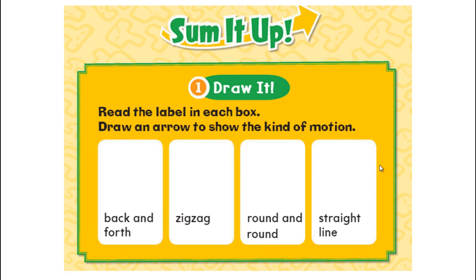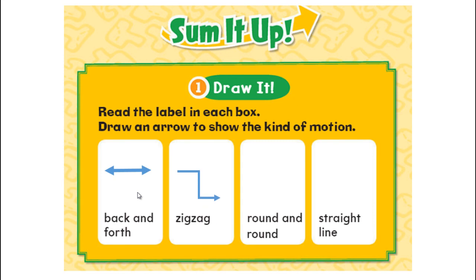Now let's sum it up. Read the label in each box and draw an arrow to show the kind of motion. For back and forth, draw a straight arrow with two heads — one forward, one backward. For zigzag, draw a zigzag shape. For round and round, draw a circle with two arrowheads. Straight line is the easiest one.